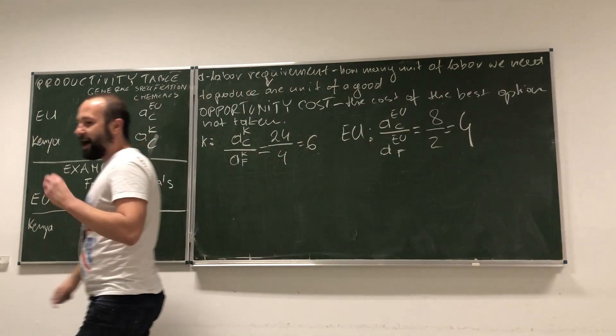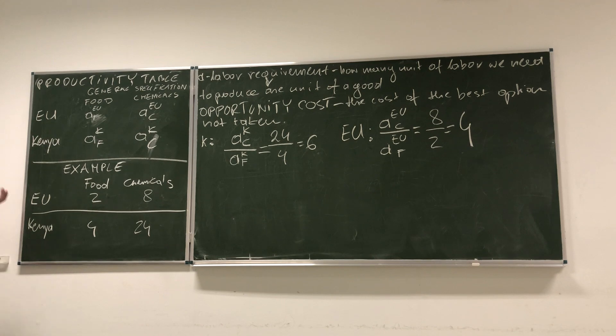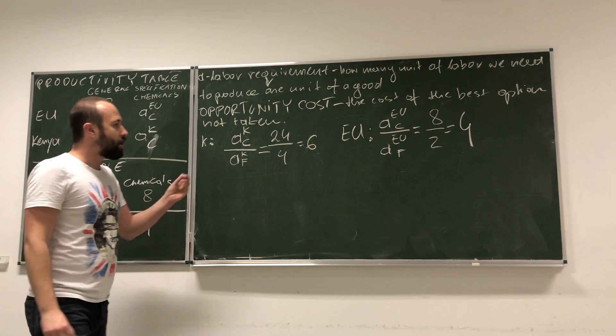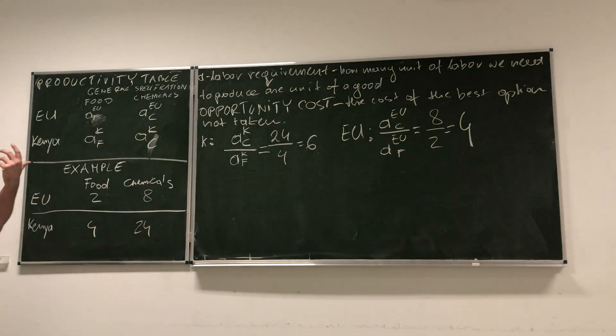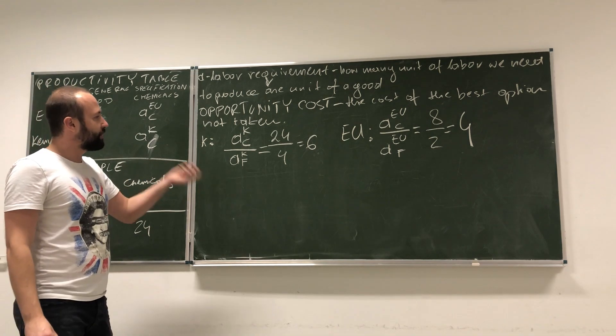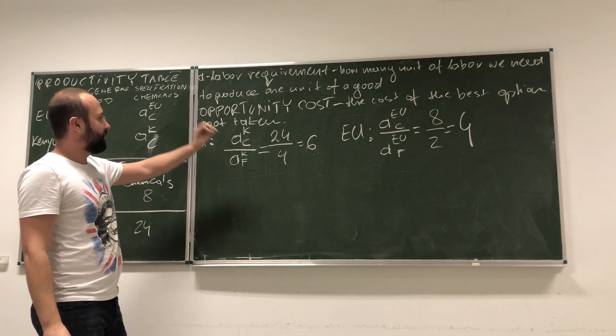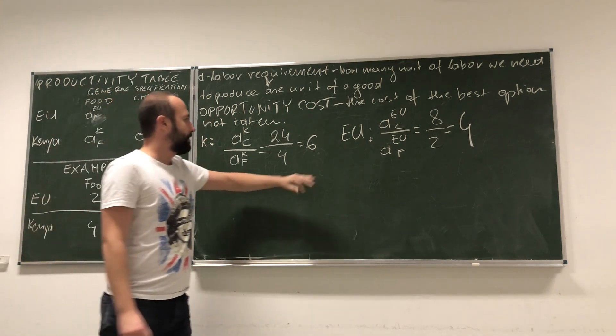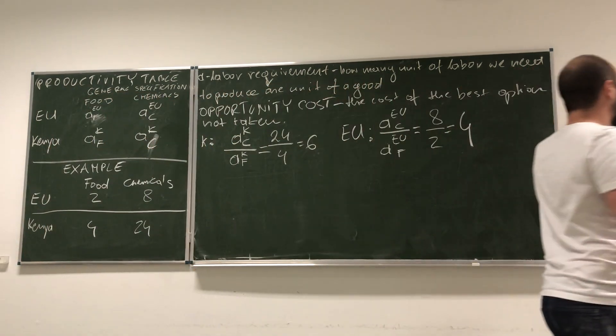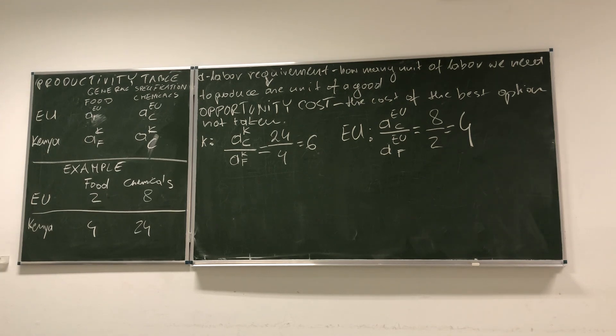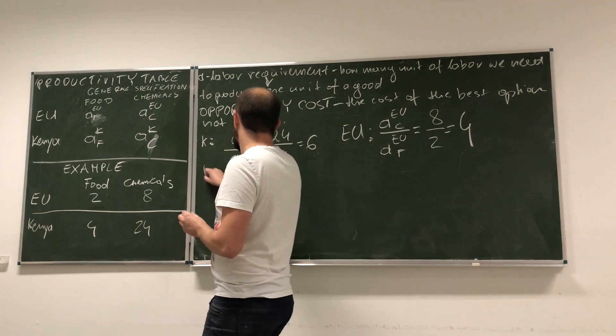Okay, so look, actually, what we learn from this simple calculation is that the opportunity cost of producing one more unit of chemicals is higher in Kenya than in EU. So, can we imagine that if those two countries could trade with each other, could they benefit from it? Look, we can imagine it in a very simple example.